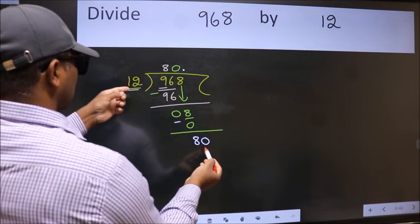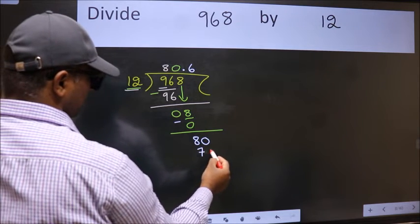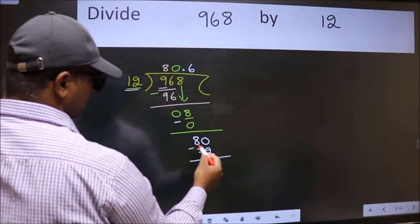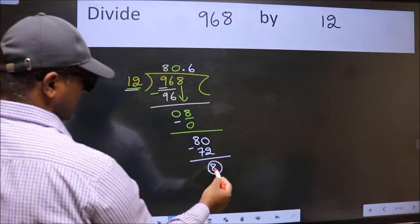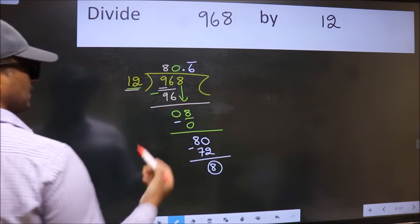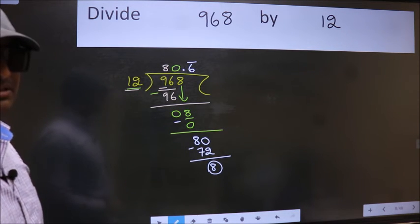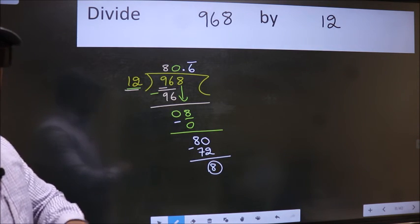A number close to 80 in the 12 table is 12 times 6 equals 72. Now we subtract, we got 8 again. That means we get bar on this number. Did you understand where does the mistake happen? You should not do that mistake.